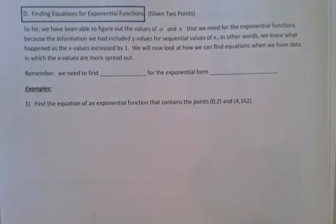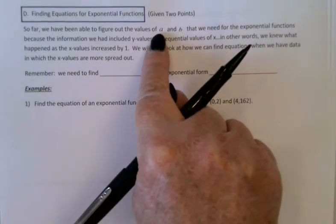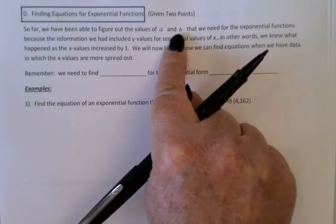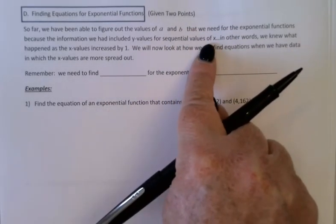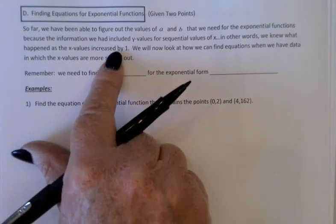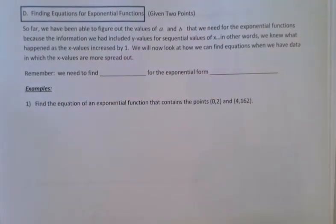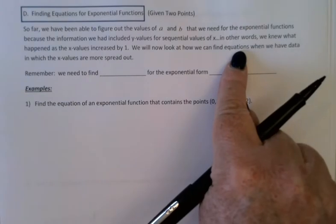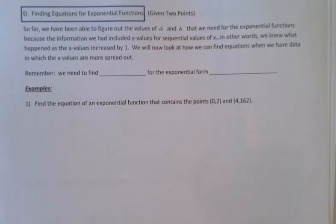This is section 3.2 part d. We're now going to turn to the problem of finding an equation for an exponential function when we don't have a table that shows us sequential values of x that all increase by 1. So far when we wanted an exponential function, finding the value of a and b wasn't that difficult because we had that table of sequential values. We knew what happened as the x values increased by 1. Now however, we'll look at how do we find equations where we have data with the x values being more spread out.